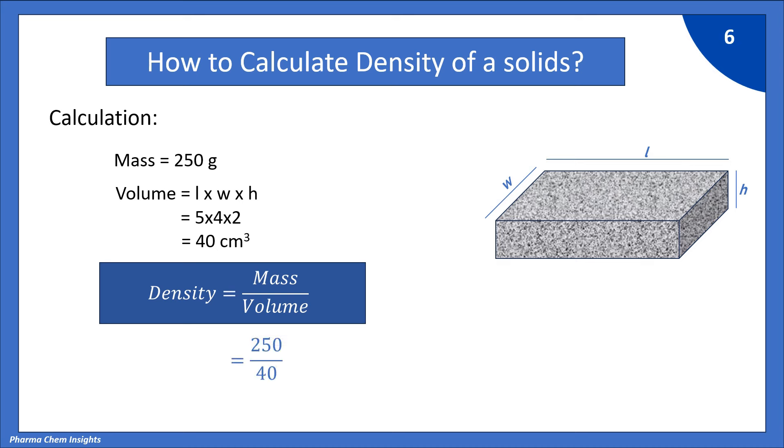So, by putting the values 250 divided by 40, we get 6.25 g per cm cube. So, density of given solid block is 6.25 g per cm cube.